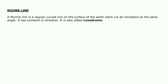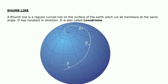A rhumb line is a regular curved line on the surface of the earth which cuts all meridians at the same angle. It has a constant direction and is also called a loxodrome. In this picture you can see the rhumb line cuts all meridians at the same angle — that is beta — that's why it is also called constant in direction.